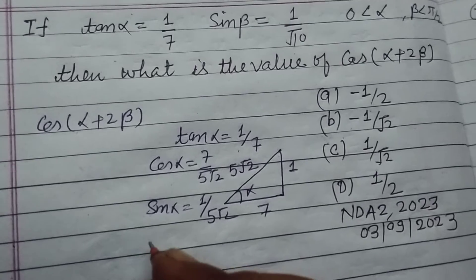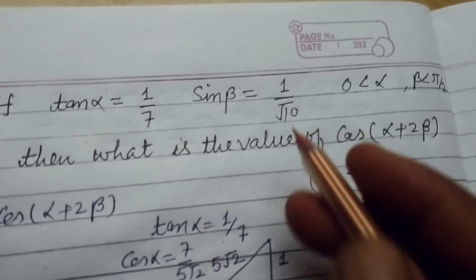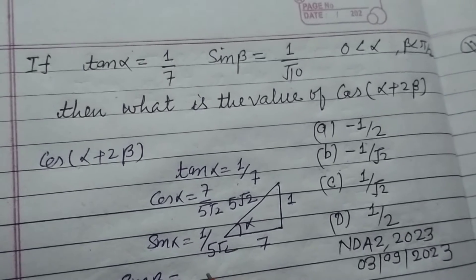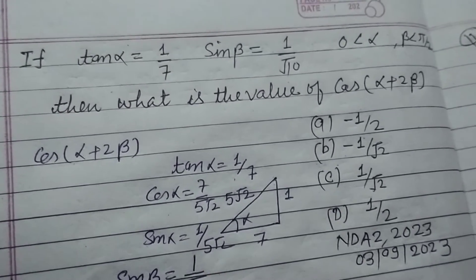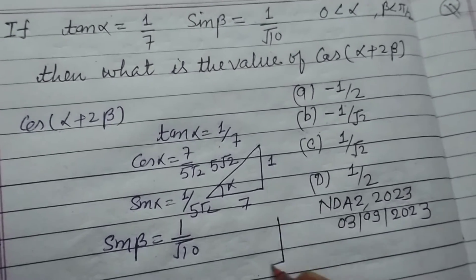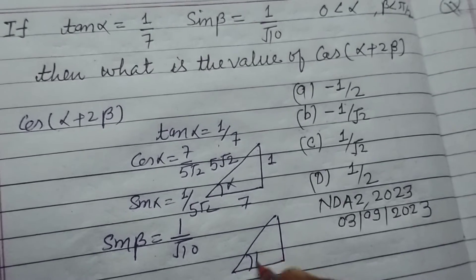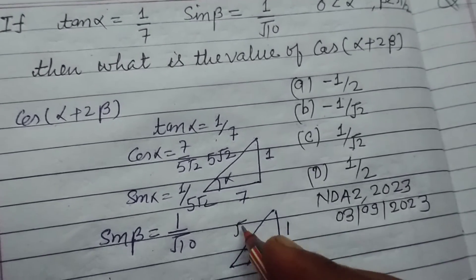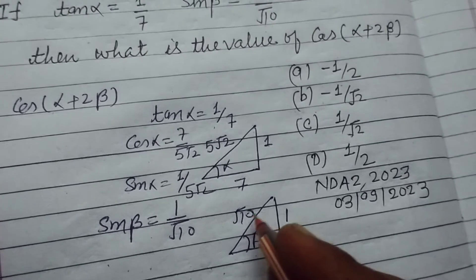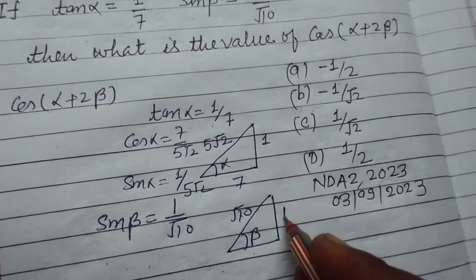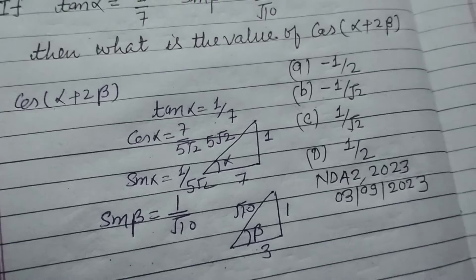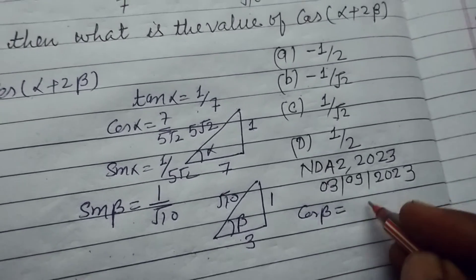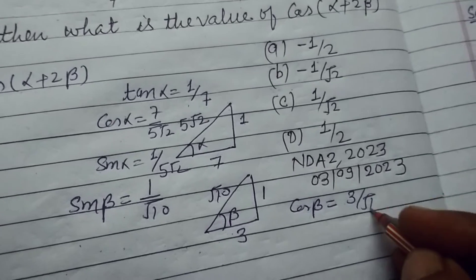It is also given that sin β. We can make another triangle for β where sin β equals 1 upon √10. The base is √(10 - 1) = 3, so cos β is 3 upon √10.